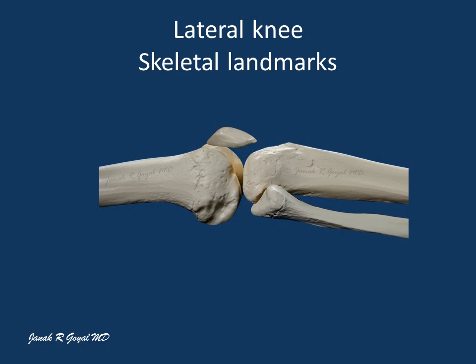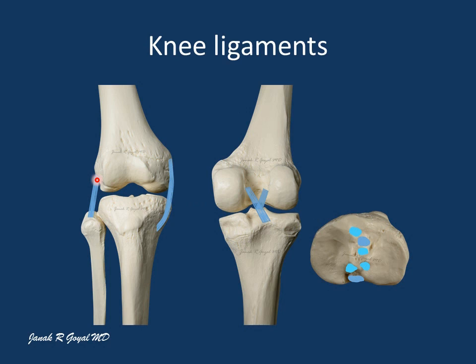The fibular collateral ligament is attached to the lateral femoral epicondyle proximal to the popliteal groove and to the head of fibula. The fibular collateral ligament is separated from the joint capsule by fat and the inferior lateral genicular vessels and nerves.